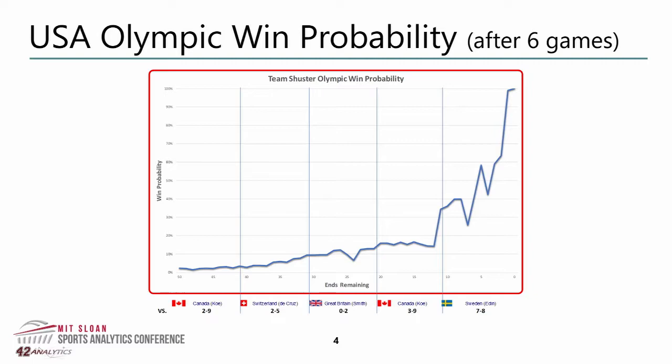When we talk about Team Schuster — an interesting note from that series — we've all heard the 'miracle on ice' term for Team Schuster and what they overcame to go on and win the Olympic gold medal. What you see here is the win probability chart after they were two and four. They dug themselves a bit of a hole, but what they accomplished in Pyeongchang at the Olympics is quite remarkable, and they managed to dig down and find what they needed to go on and win that gold medal.